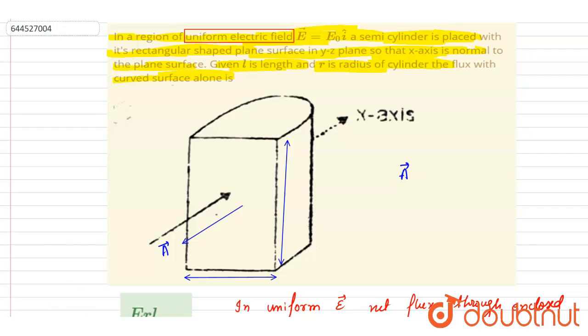If you see this length will be 2r here and this length is l. So this is l, this is 2r, so I will write down 2rl î cap. Electric field is this, so I will write down the flux equals to, it will be equal to minus 2E₀rl.